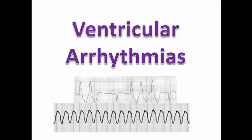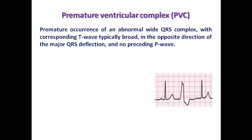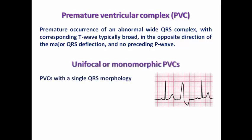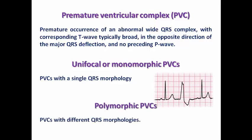Let's start with defining the different types of ventricular arrhythmias. A premature ventricular complex, or PVC, is a premature occurrence of an abnormally wide QRS complex with a broad T wave in the opposite direction to the major QRS deflection and no preceding P wave. It may be unifocal — monomorphic PVCs showing a single QRS morphology — or polymorphic, showing different QRS morphologies.